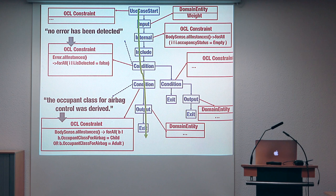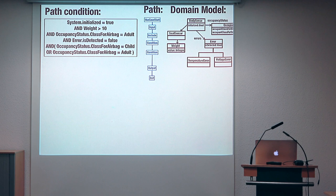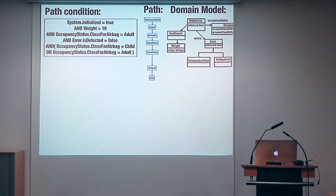From the path we want to cover with a test case, we can automatically identify the inputs that enable us to execute this path on the concrete system. What we do is to generate a path condition by joining all the constraints that appear on the path. If we want to cover the basic flow, we want to have a weight that is above 10, a system that has been initialized, then the class adapt is derived, and so on. This is the standard way we generate test inputs in testing.